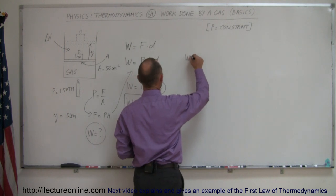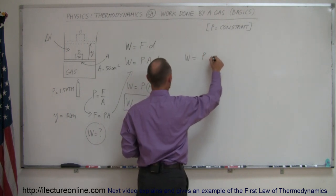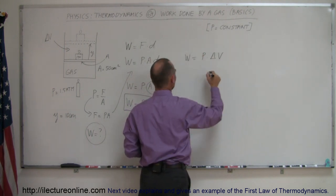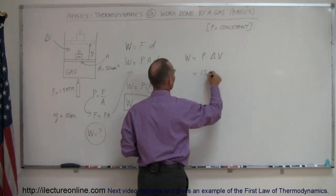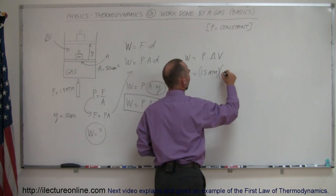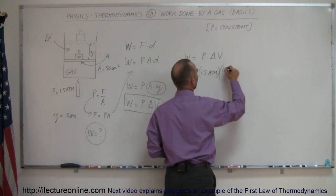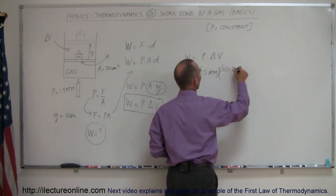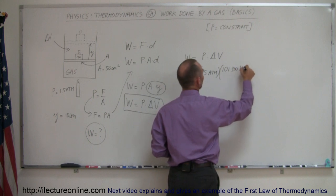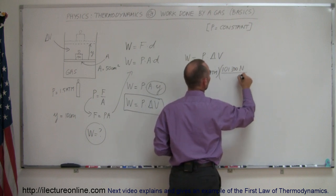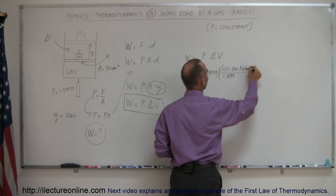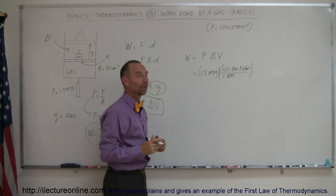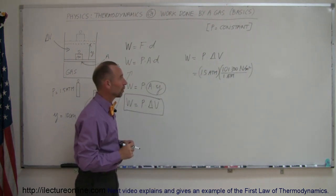The work done is equal to pressure times the change in volume. The pressure is 1.5 atmospheres. That has to be converted to pascals, which is 101,300 pascals, or newtons per square meter, per one atmosphere. That's pressure changed to newtons per square meter.